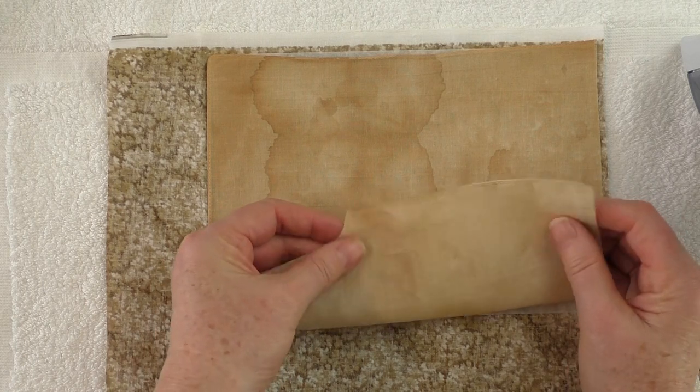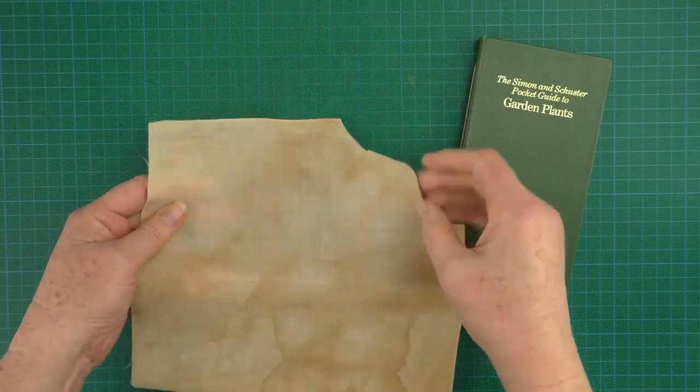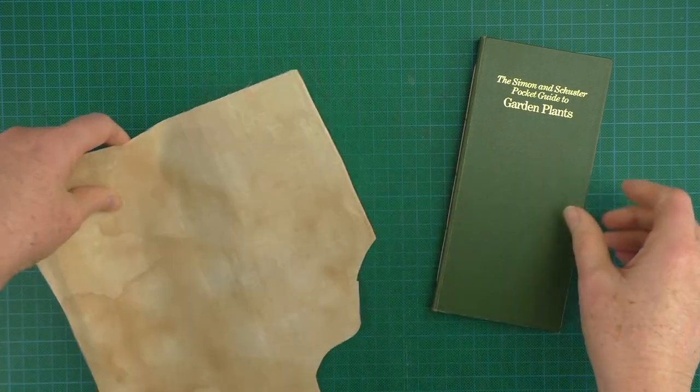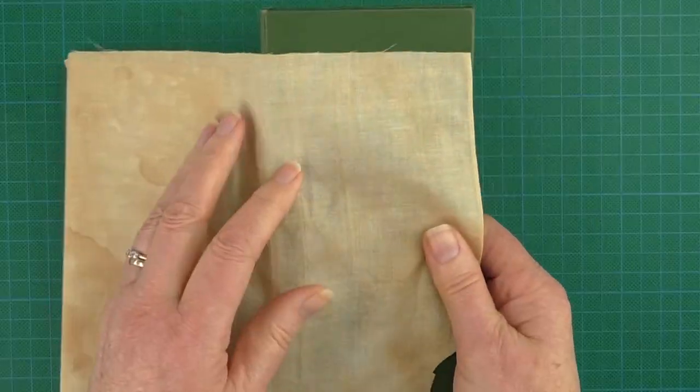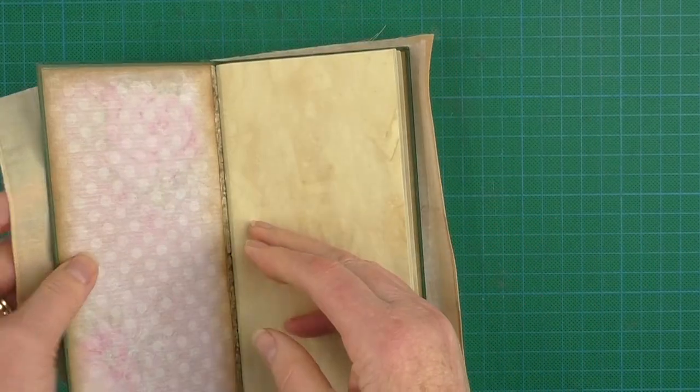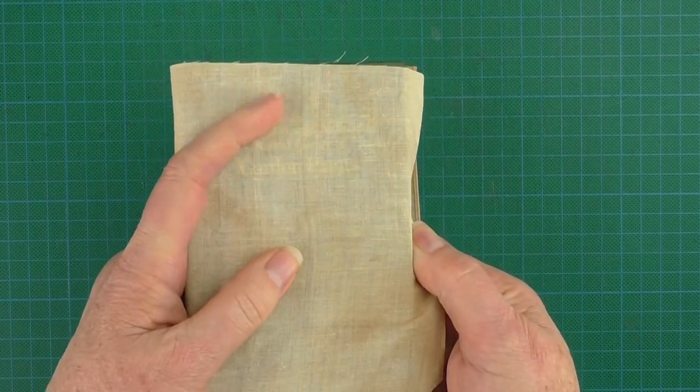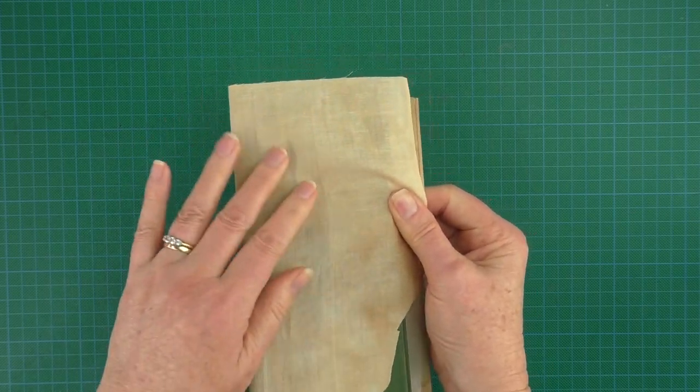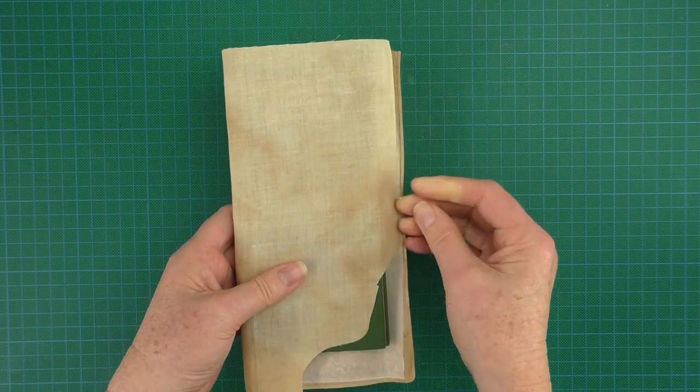If you've got a very fine book cloth like this, in this instance I'm using an old handkerchief. Let's say I want to put it on this cover. It's going to be way too thin. You can see there, you can see the book label through there. You can see if I stretch it out that it's just too thin to go on as a book cover.